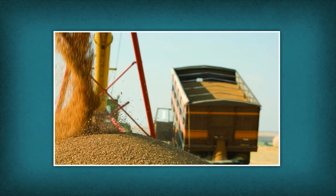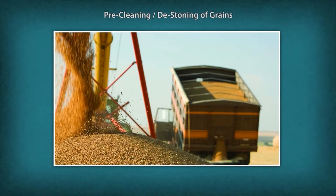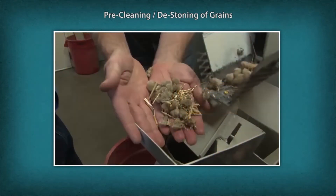Pre-cleaning and de-stoning of grain. When grain comes into the mill it contains foreign material such as straw, weed, seeds, soil and other inert material. If this is not removed prior to hulling, the efficiency of the huller and the milling recovery are reduced.